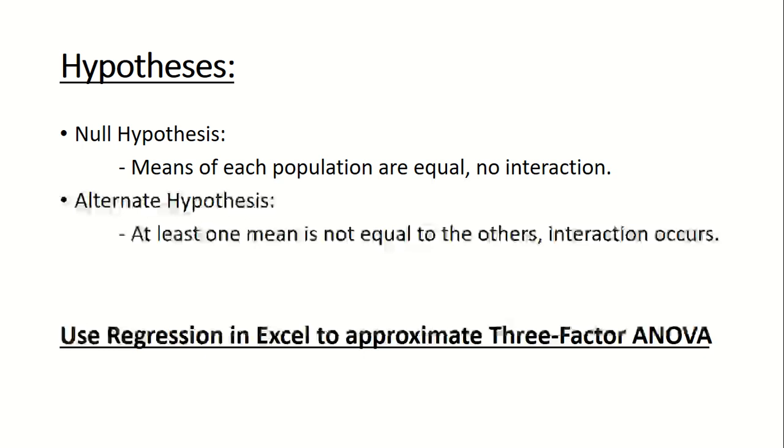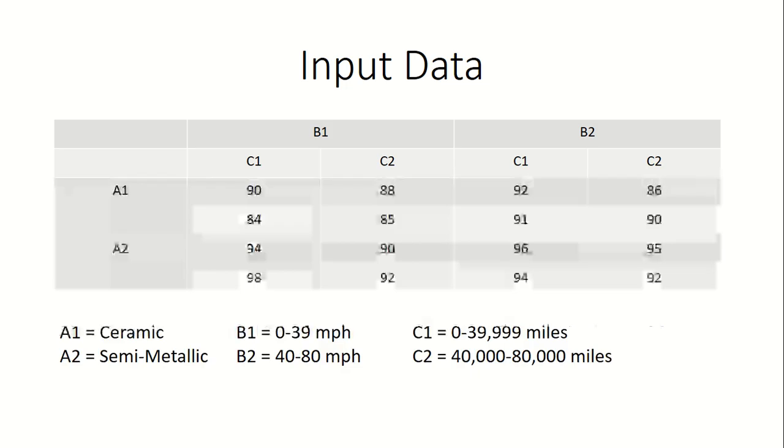We will use the regression analysis in Excel to approximate three-factor ANOVA. First, create a chart with all of the calculated data. This data would usually be gained experimentally, but was randomly generated for the purposes of this video. Each value in the chart represents a brake pad reliability at the given conditions, and each column or row shows the result of keeping one factor the same while varying the two others.